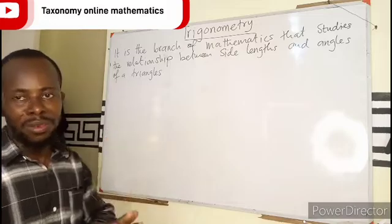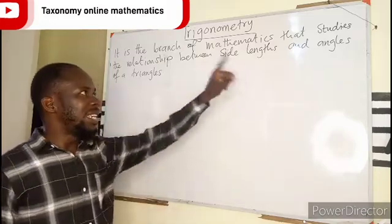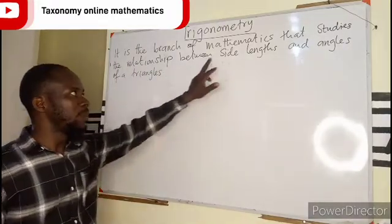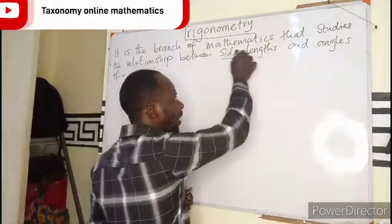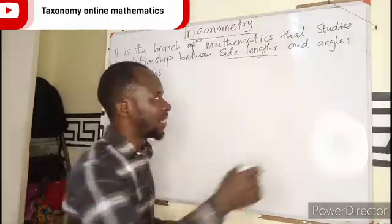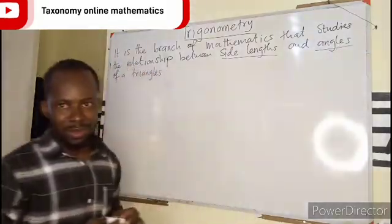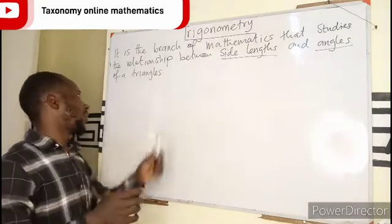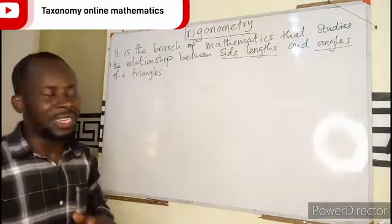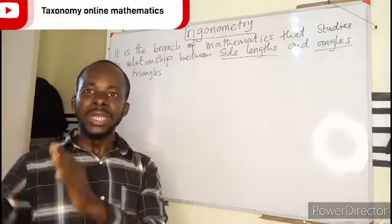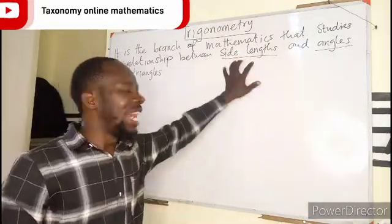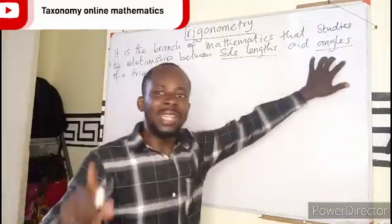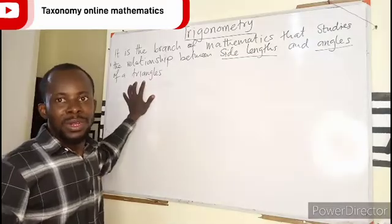Trigonometry is just a branch of mathematics that studies the relationship between side lengths and angles of a triangle. These are the key points we need to know - it deals with the relationship between the lengths of the sides and the angles of a triangle.